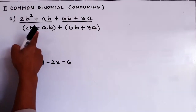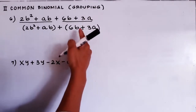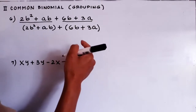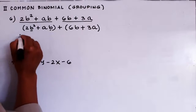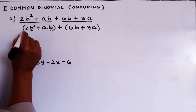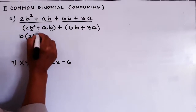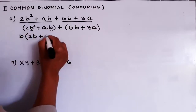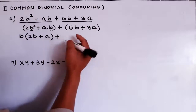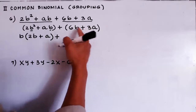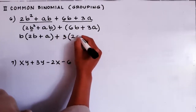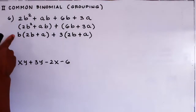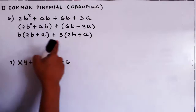Now we have two groups. In the first group, we factor using a common monomial, and also in the second group we factor by common monomial. The common monomial in the first group is B: 2b squared divided by B is 2b, plus ab divided by B is a. We also factor the second group — the common factor is 3 — so we have 3, and then we have 2b plus a.